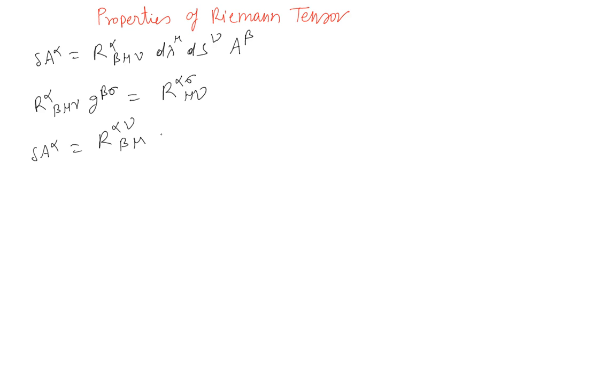Beta mu A beta ds nu and d lambda mu. So here we see we are using the covariant components of the line element ds instead of using the contravariant element which we are using before.